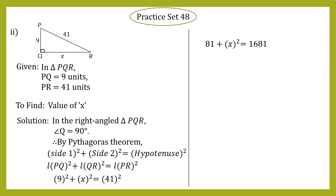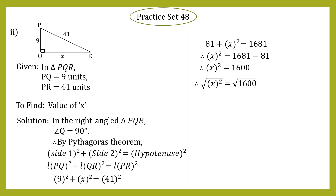So we get 81 + x² = 1681. Transposing 81 to the right-hand side, it becomes minus: x² = 1681 − 81 = 1600. To find x, we take the square root: √(x²) = √1600.